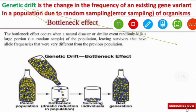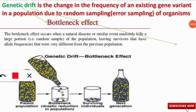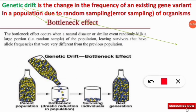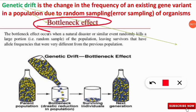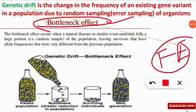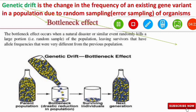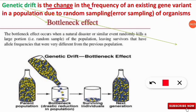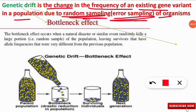Next, we discuss genetic drift as another possible reason for the high prevalence of color blindness in a population. Genetic drift can be divided into two categories: bottleneck effect and founder effect. Genetic drift is the change in the frequency of an existing gene variant in a population due to random sampling or error in sampling of organisms.